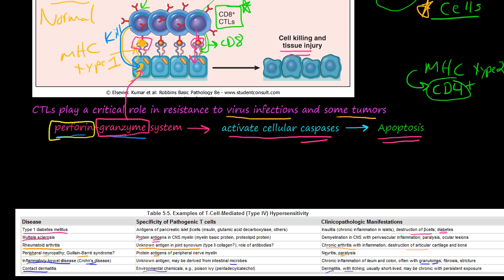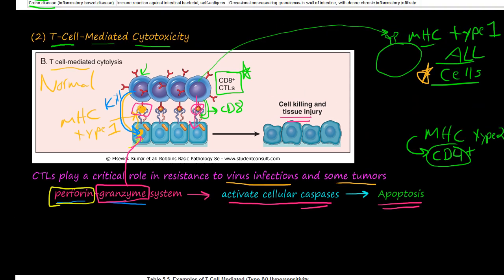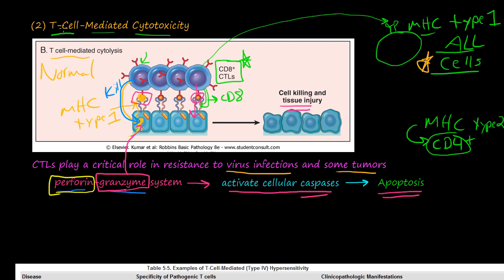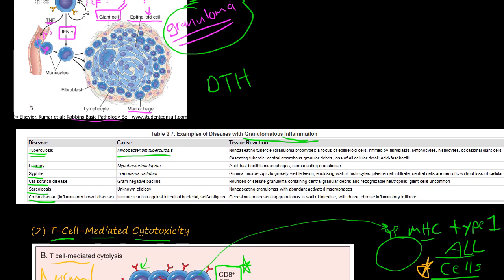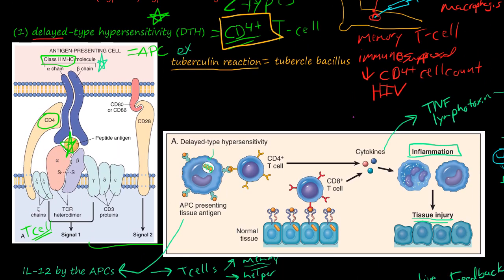So hopefully we understand that the type 2 T-cell mediated cytotoxicity involving the CD8 plus T-cell is more basic and simple than the delayed type hypersensitivity with the CD4 plus T-cells. That's it for the hypersensitivity diseases. In the next video we'll talk about autoimmune diseases and transplant rejection.